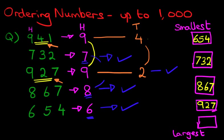That leaves just one number, nine hundred and forty-one. And we've done it. We have reordered the numbers into a list starting from the smallest at the top to the largest at the bottom. And that is how we order numbers up to one thousand.